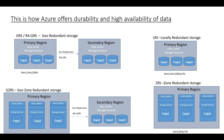Starting with locally redundant storage: you have a primary region where your data is stored. For me, my primary region is US. My data is stored in US in a single data center in three copies. This is the architecture of how locally redundant storage works — data in a single data center in the primary region. If there is any issue with that data center, you probably won't be able to recover your data, and that is the reason zone redundant storage came into picture.